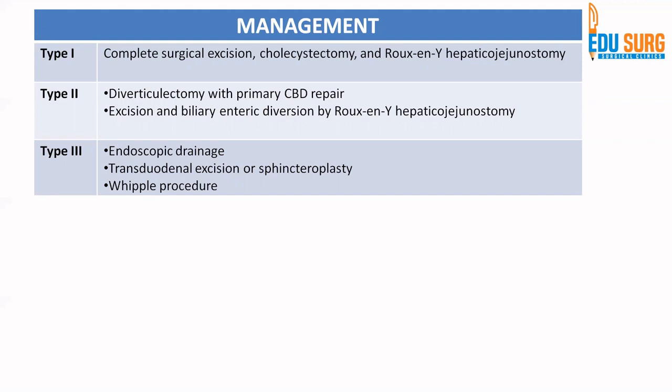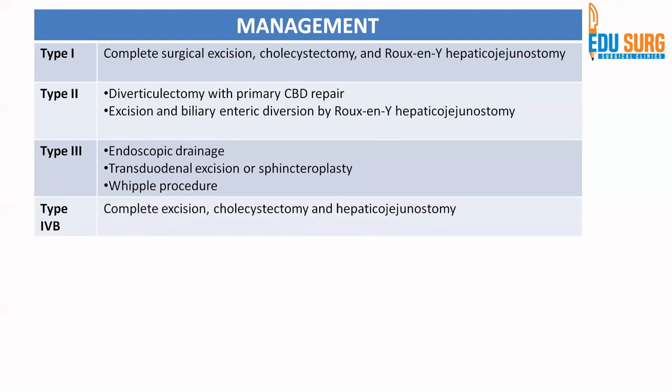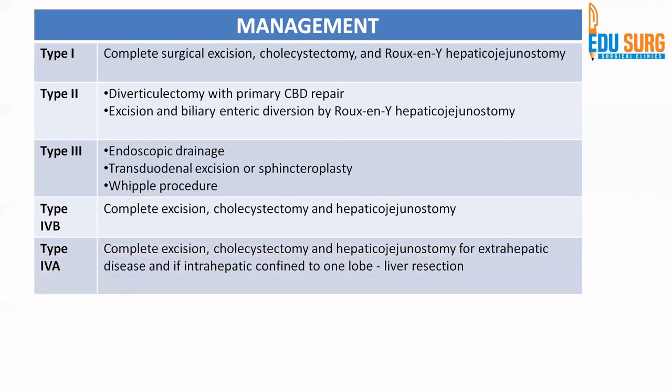For Type 3, you can do endoscopic drainage, transduodenal excision, or sphincteroplasty, and rarely a Whipple procedure. For Type 4B, which is predominantly extrahepatic disease, the treatment is again complete surgical excision with cholecystectomy and Roux-en-Y hepaticojejunostomy.